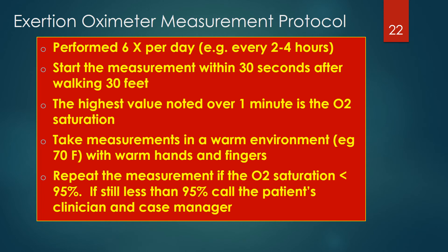Exertion oximeter measurements should be performed by the patient six times a day, approximately every two to four hours, and reported to the case manager during their daily follow-up call. Exertion O2 means measuring oxygen saturations with a pulse oximeter after walking approximately 30 feet. The highest O2 saturation value noted over a one-minute observation time should be recorded on the patient's oxygen saturation table along with the time of the reading. Readings below 95% should be repeated, and if a second reading is below 95%, the patient's clinician and case manager should be contacted.